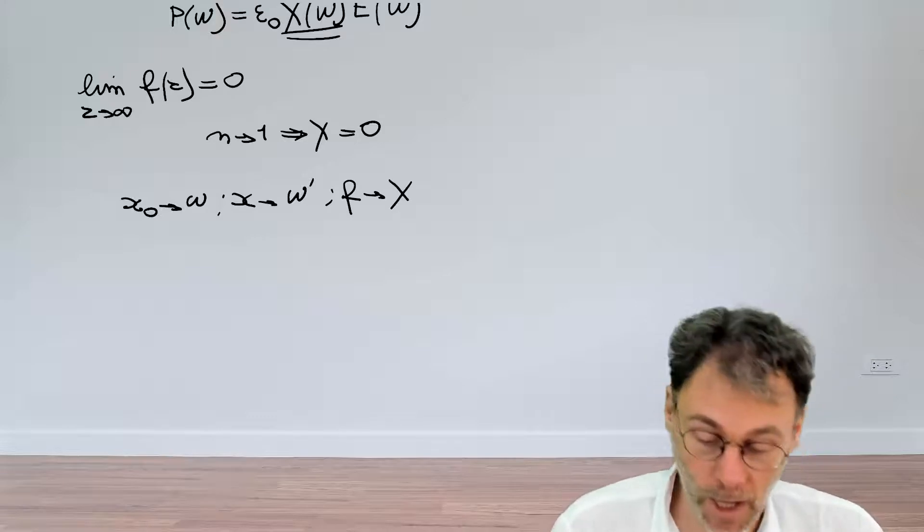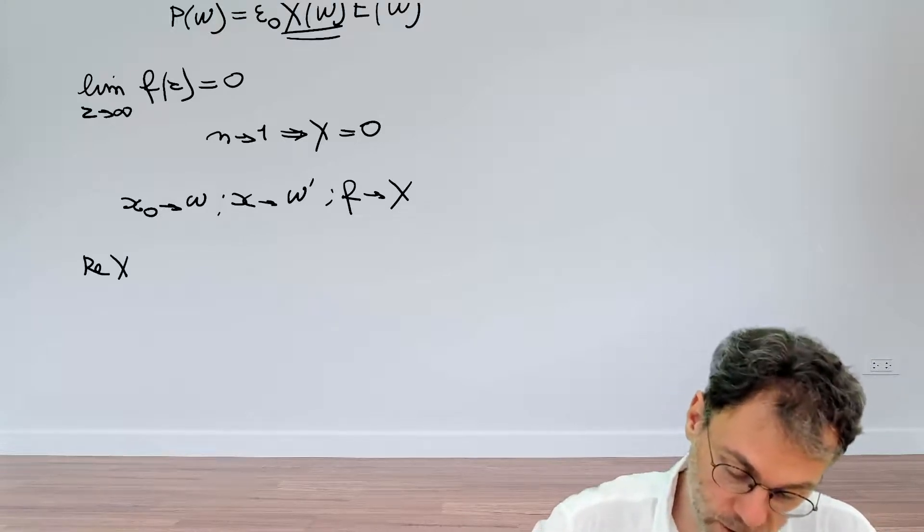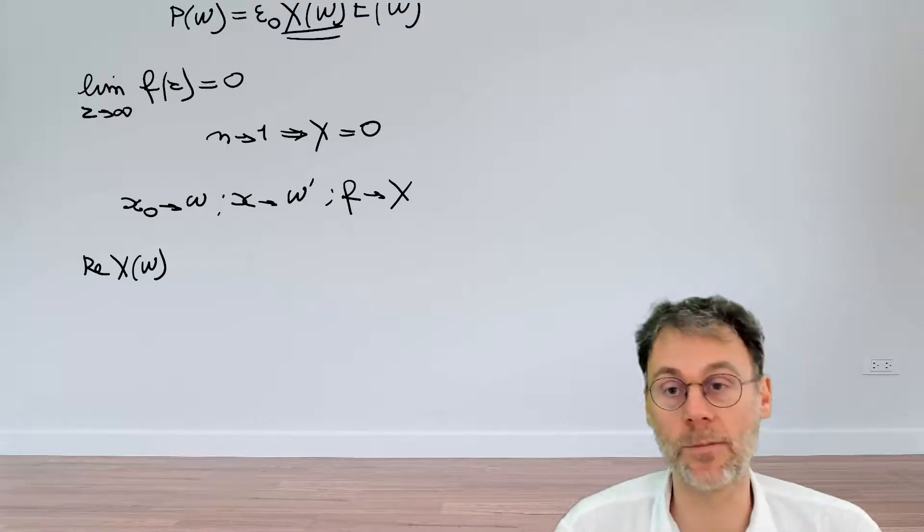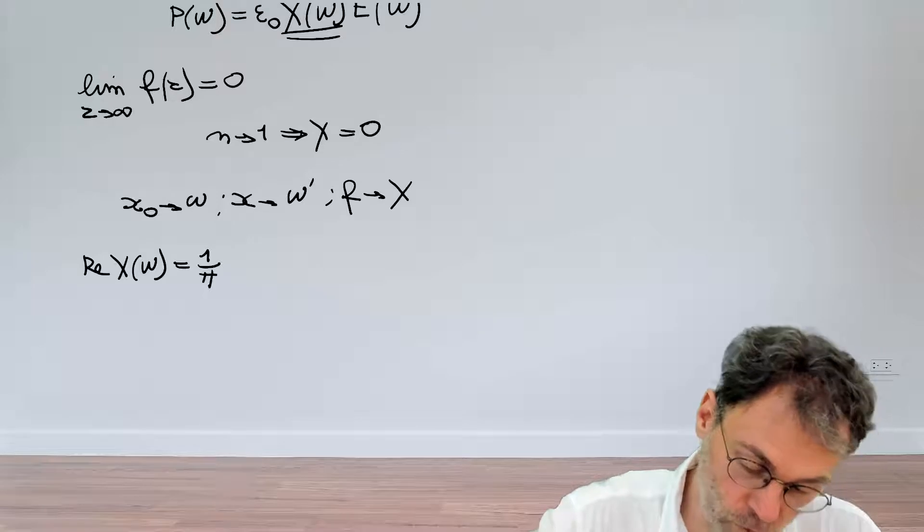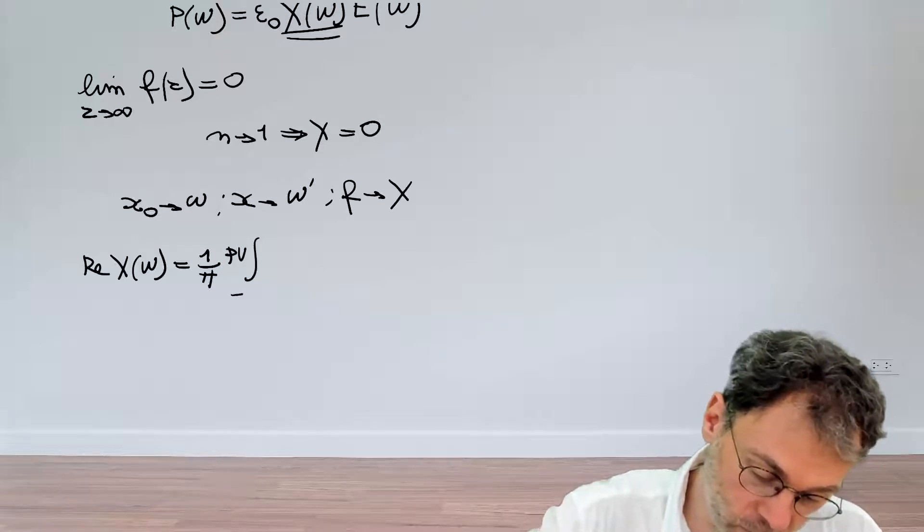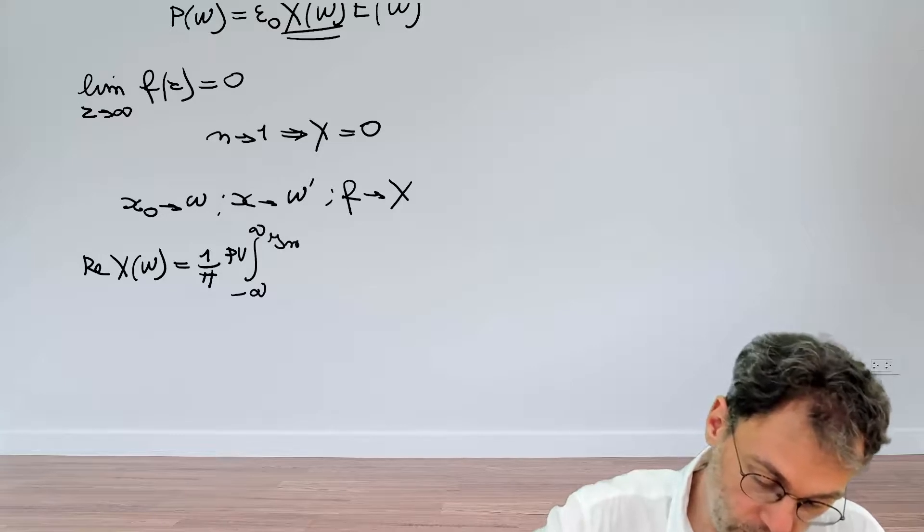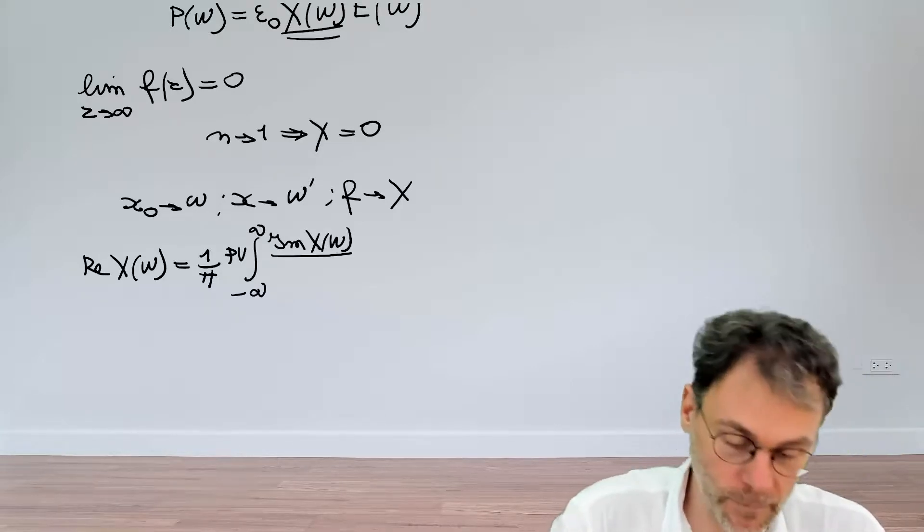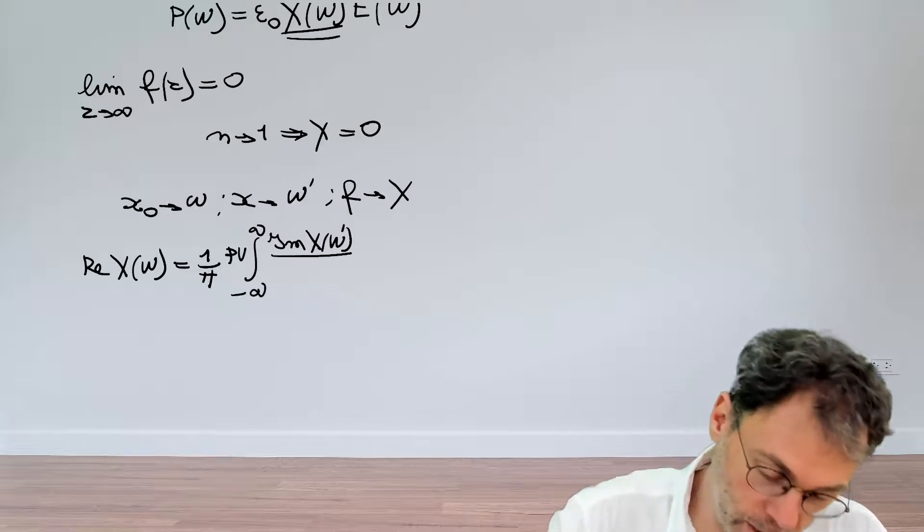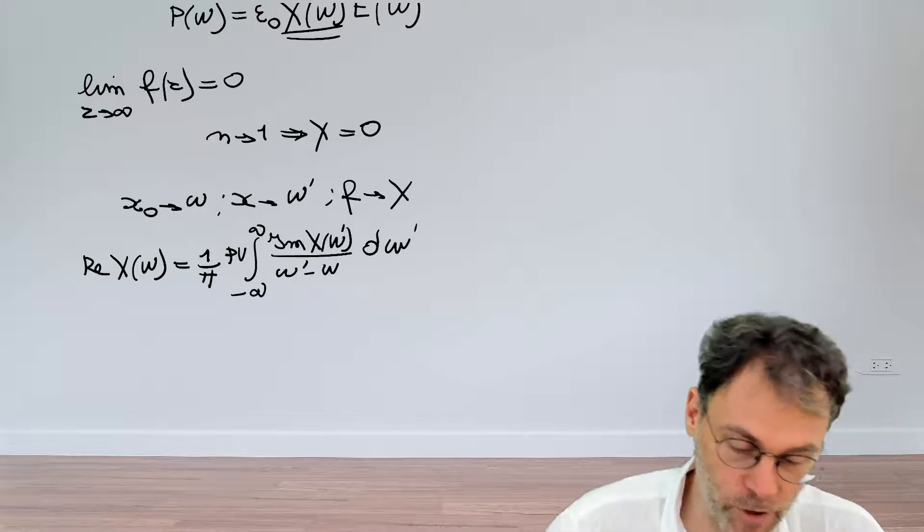And then of course our arbitrary function now is the susceptibility, and then it's just a matter of making these substitutions. We can say that the real part of the susceptibility as a function of frequency is equal to 1 over π, the principal value integral from minus infinity to plus infinity of the imaginary part of the susceptibility at omega prime, divided by omega prime minus omega, d omega prime.